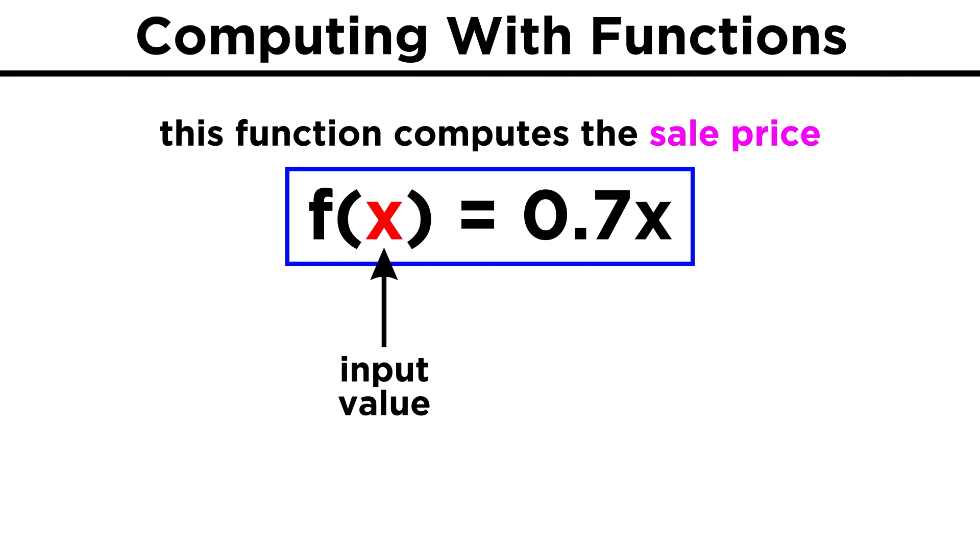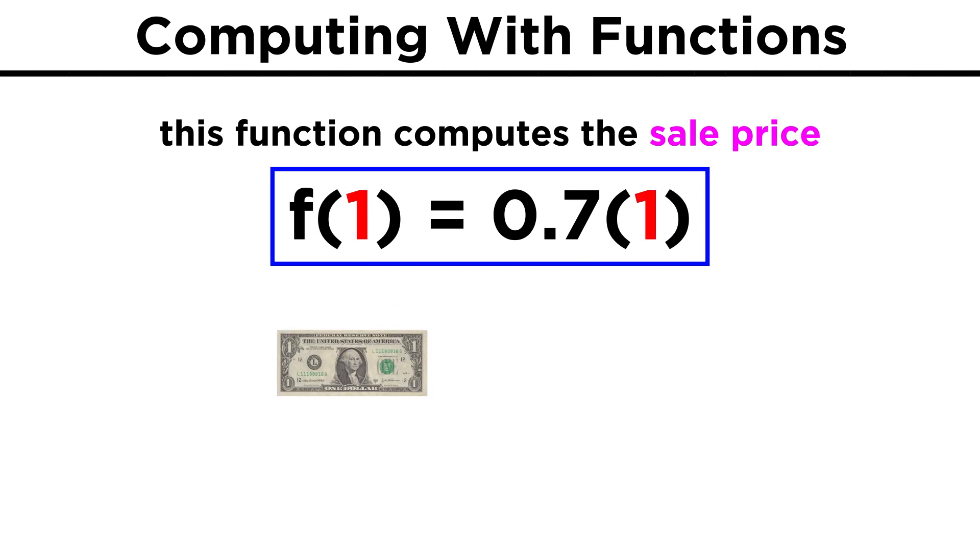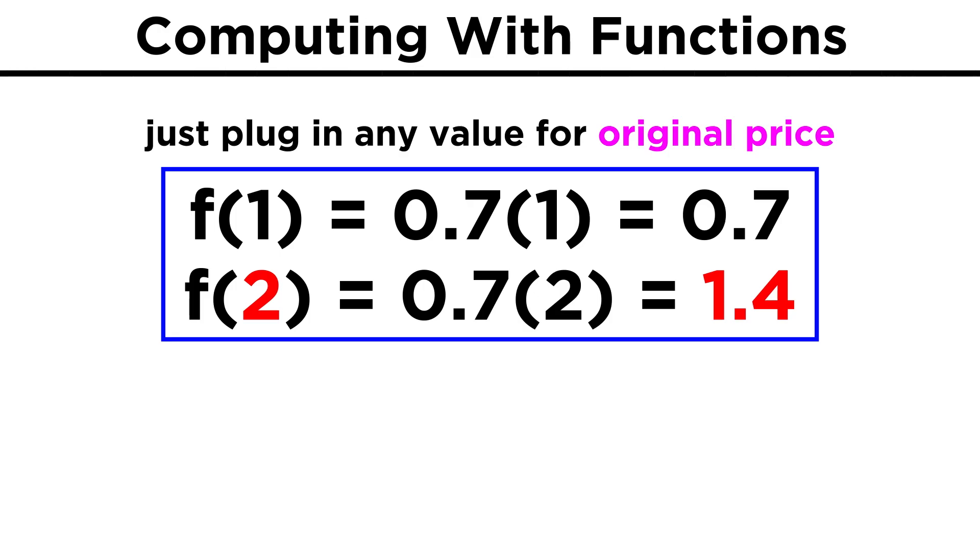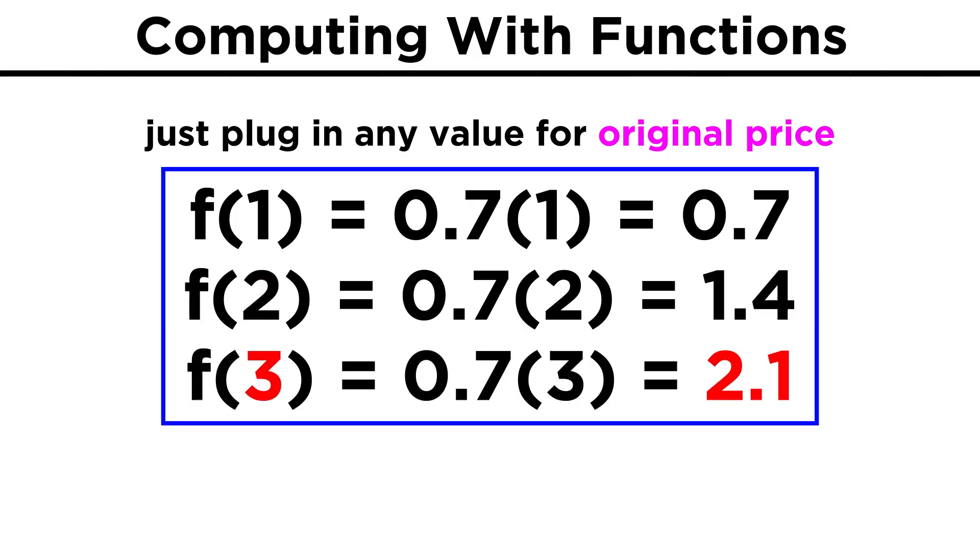If we plug in one dollar for x, the function spits out seventy cents, so f of one equals zero point seven, f of two equals one point four, f of three equals two point one, and so forth.